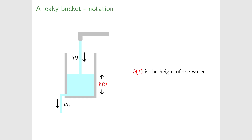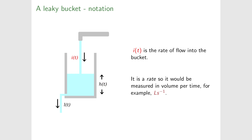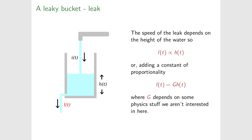Some notation: h(t) is the height of the water, i(t) is the rate of flow into the bucket — measured in volume per time, like liters per second. Similarly, the leak l(t) is the flow out of the bucket. The speed the water flows out is proportional to the height — a linear relationship — so we write l(t) = G · h(t), where G is a constant. If you double the height, you double the leak.